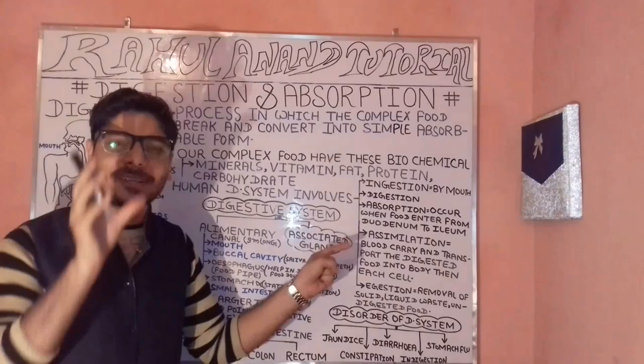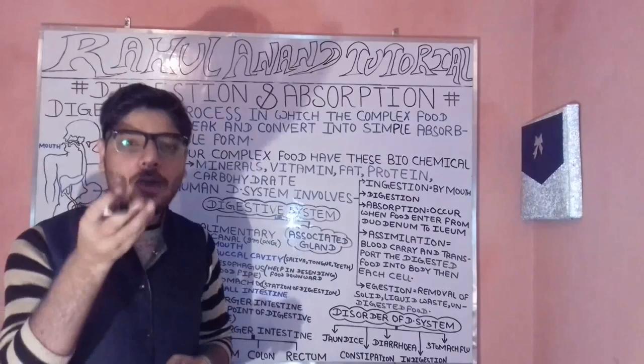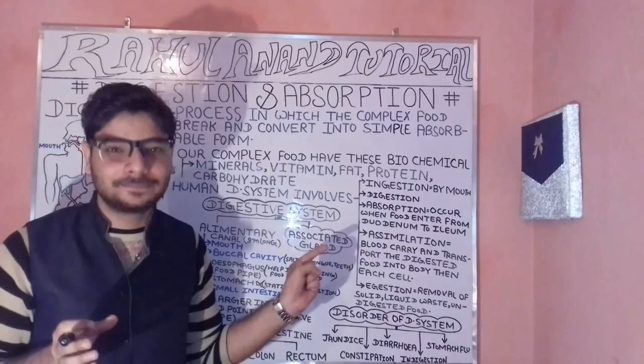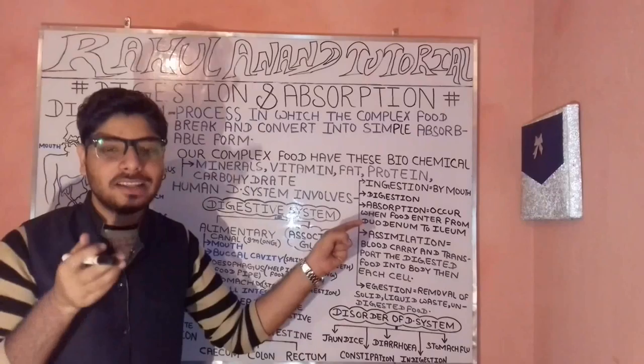When we talk about ingestion, something is particularly entering into our oral cavity or mouth. The mouth is the primary entering point from which complex food literally enters, and it is the beginning point from which the digestive course is initiated.